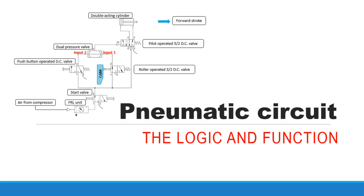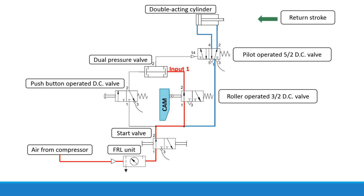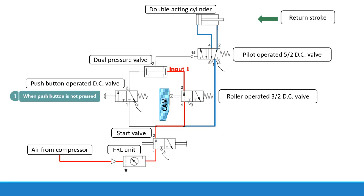In this video we will try to understand the logic and function which is used in case of a pneumatic circuit. The arrangement of the circuit is as shown. The various components used are the FRL unit, the start valve which is the direction control valve, and it is a normally open valve.